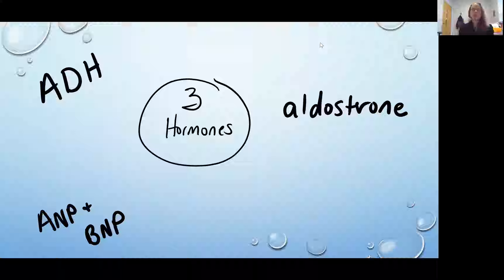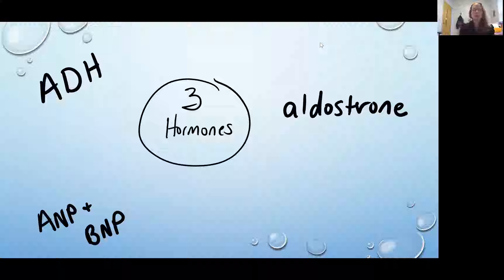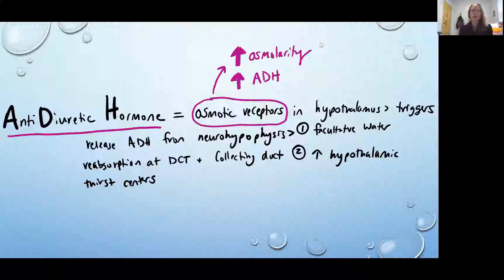We are going to be reviewing three important hormones involved in fluid balance. These are ones we've talked about before — at least the third chapter where we've discussed these. So we have ADH, which stands for antidiuretic hormone; we have aldosterone; and then the ANP and BNP in the corner there is our abbreviation for the atrial natriuretic peptide or the B-type natriuretic peptide. So we really just talked about it as natriuretic peptide in the past.